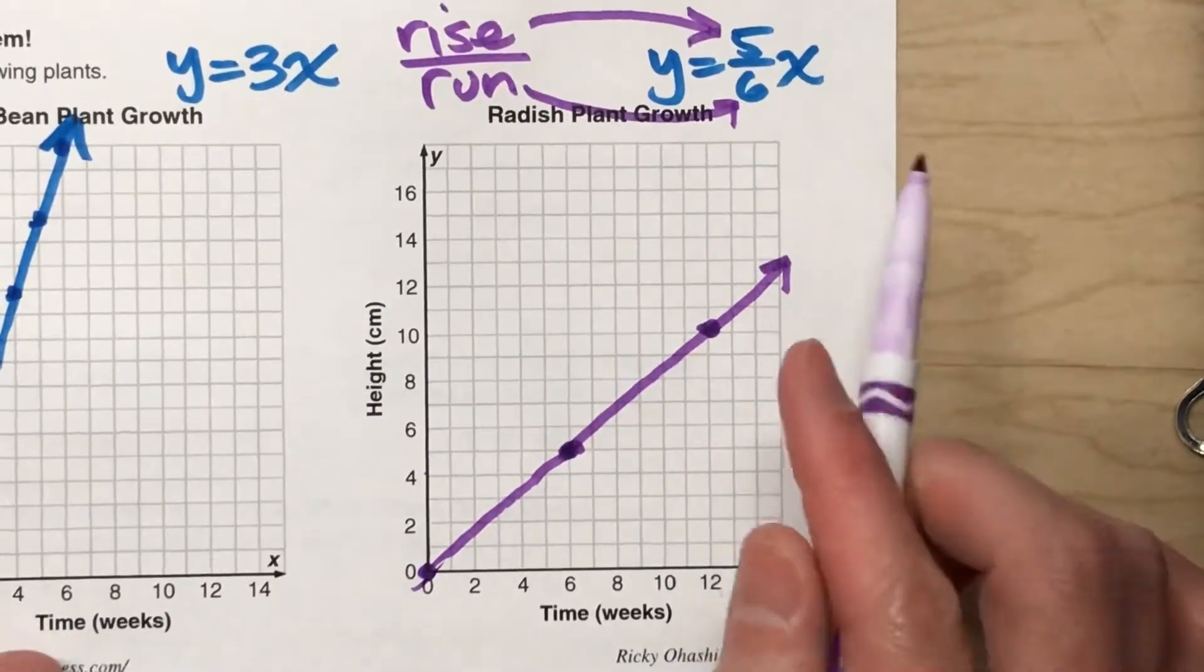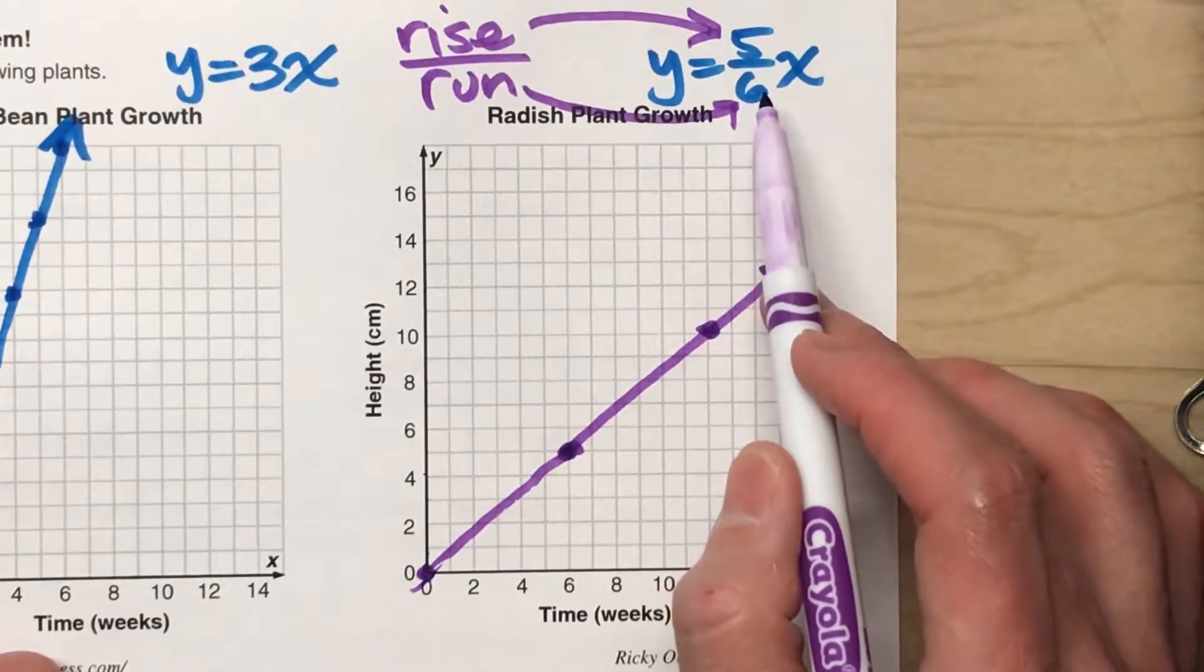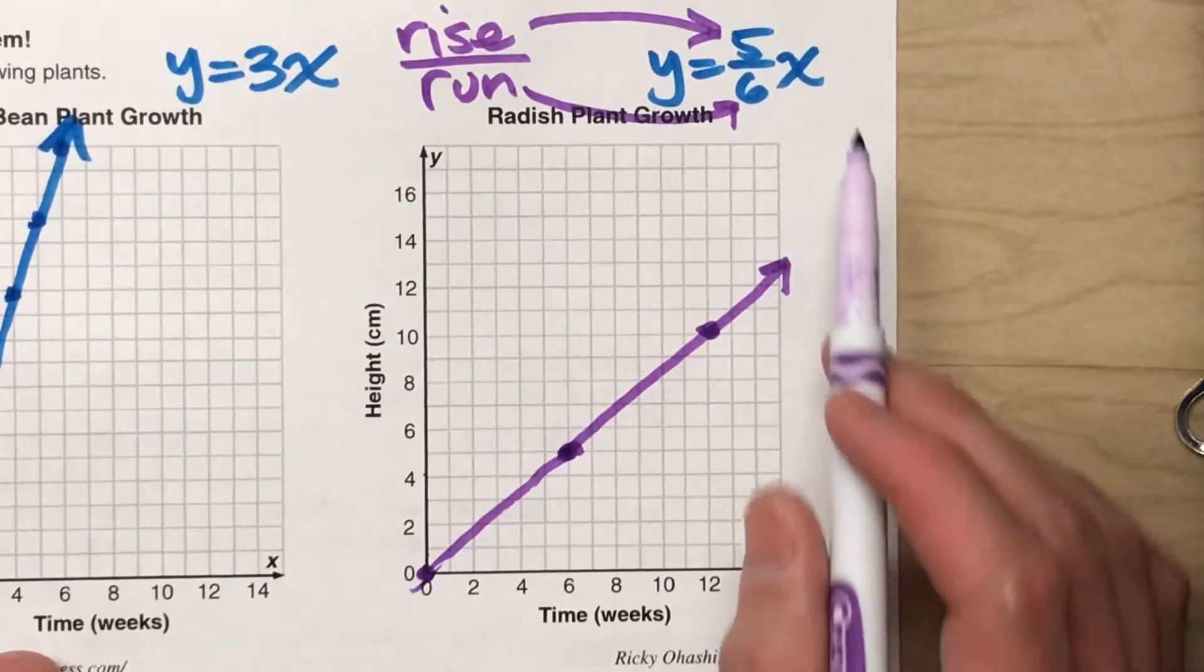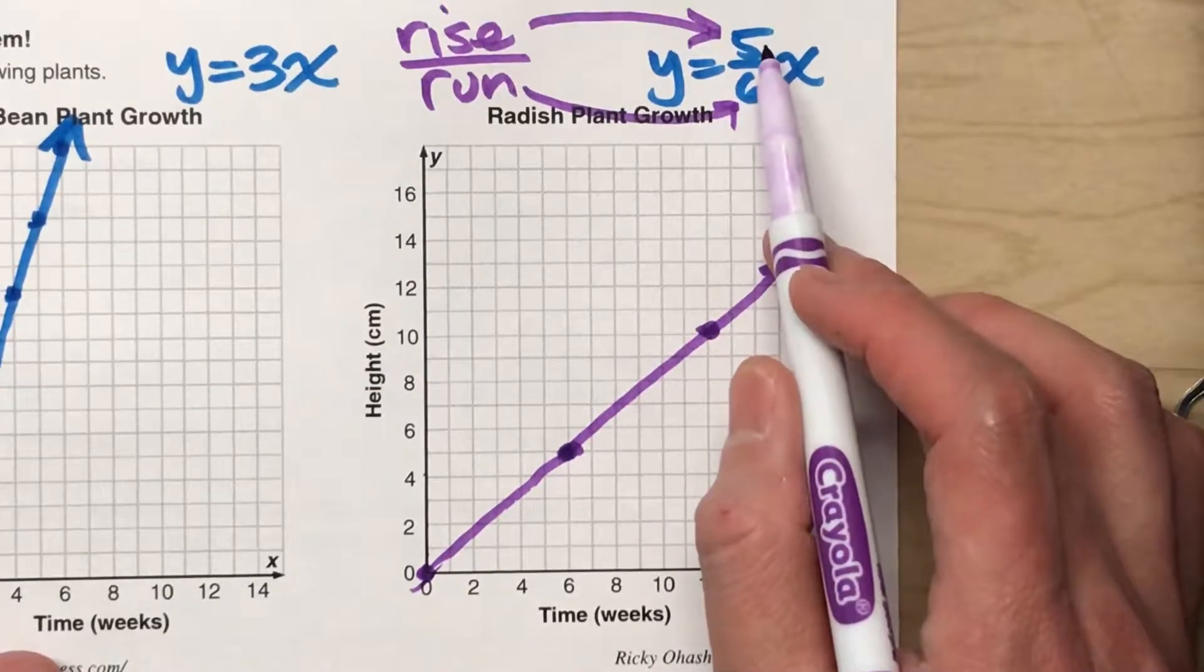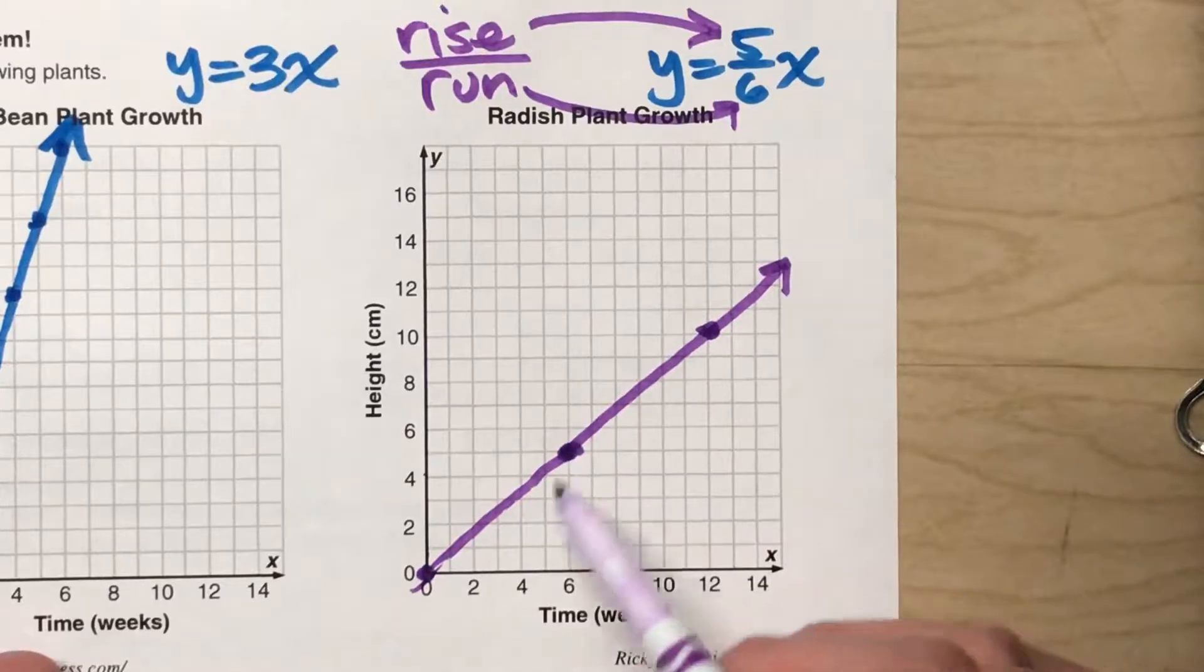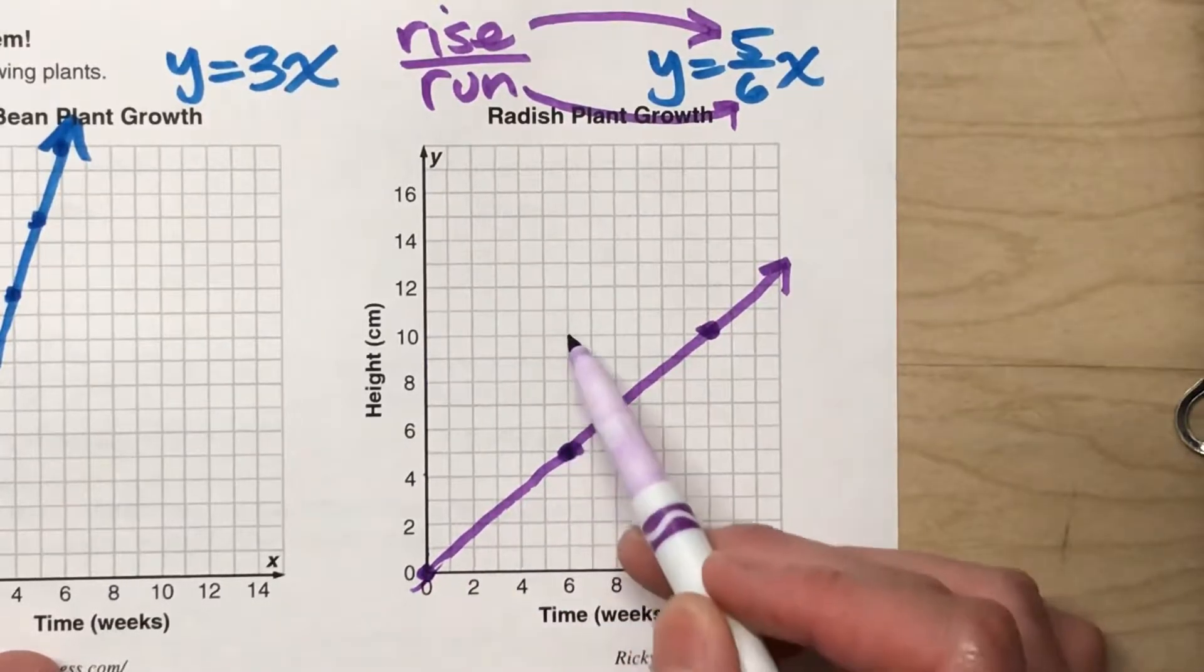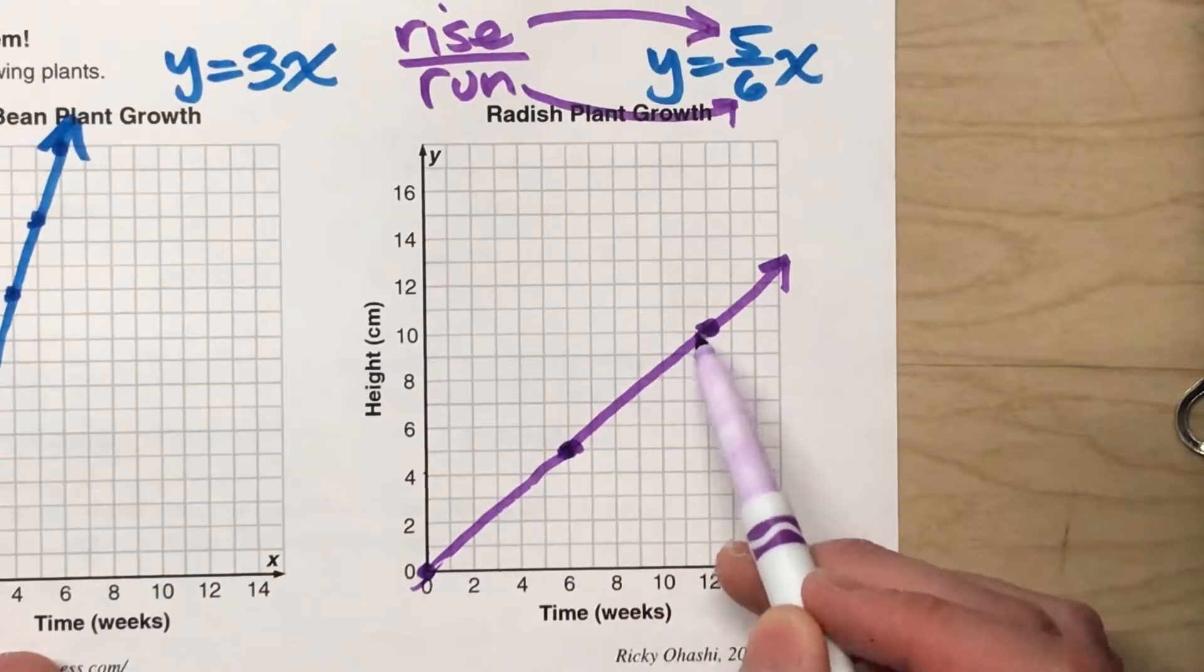Now the reason why this works is because, sure, it grows 5 sixths of a centimeter per week. But another way to interpret this is that it grows 5 centimeters every 6 weeks. And that's what we're really plotting here. Every 5 centimeters takes 6 weeks. Another 5 centimeters, another 6 weeks.